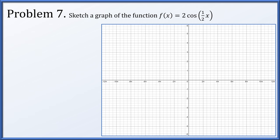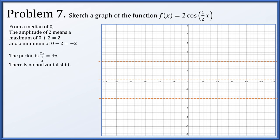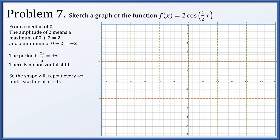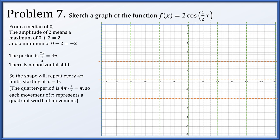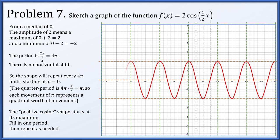In problem 7, let's sketch a graph of 2cos(½x). There is a median of 0 and an amplitude of 2, so the maximum will be at 2 and the minimum at -2. The period computes out to 4π. There's no horizontal shift, and a quarter period is π, so we mark off segments of width π. We have a positive cosine shape that starts at its maximum. We fill in one period: head to our median, down to our minimum, back to our median, back up to our maximum. We then repeat the shape as necessary.